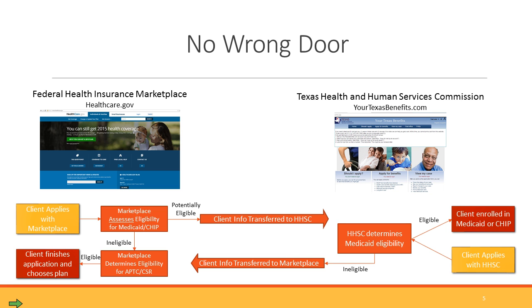There is a misconception that when you go to the marketplace you're applying only for marketplace coverage, or when you go to YourTexasBenefits.com you're applying just for Medicaid or CHIP. In fact, from a policy perspective, both applications are considered the single streamlined application — they are both applications for all insurance affordability programs, which include marketplace subsidies, Medicaid, and the Children's Health Insurance Plan. It's important to know this so you can let clients know they may end up being transferred for Medicaid and CHIP.